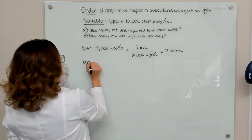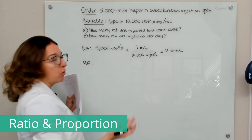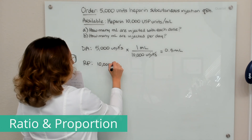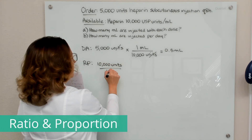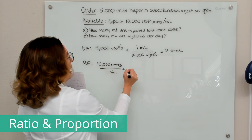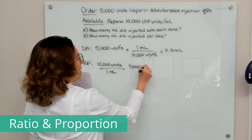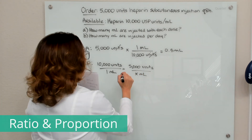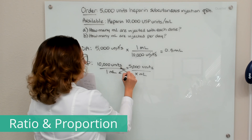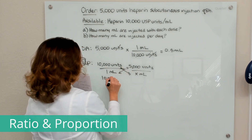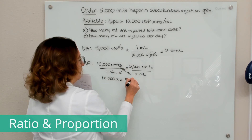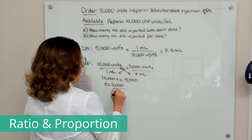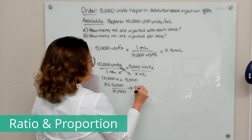Let's do the same calculation with ratio and proportion. On one side we put our known ratio — our available concentration — we have 10,000 units in 1 milliliter. What is ordered is 5,000 units, and we don't know how many milliliters, so X is our unknown. Cross multiplying: 10,000X equals 1 times 5,000, so 10,000X equals 5,000. X equals 5,000 divided by 10,000, which equals 0.5 ml.